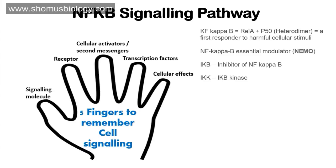For NF-kappa B, the five parameters begin with the signaling molecule. The signaling molecules used in NF-kappa B include any kind of reactive oxygen species, ionizing radiation, interleukins, tumor necrosis factor alpha or beta, and many other foreign materials from outside — for example LPS, flagellin proteins, and other foreign molecules originating from foreign organisms. These also include harmful radiation and dangerous environmental stimuli. So any kind of stress — ionizing radiation, ROS — applies stress to the cell, and these all act as signaling influencers.